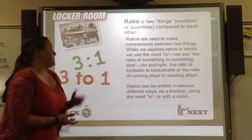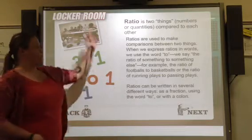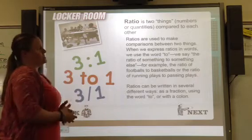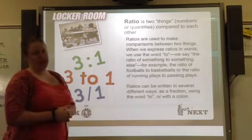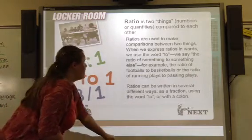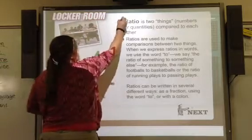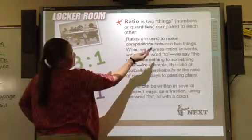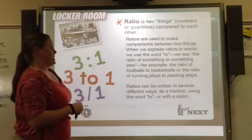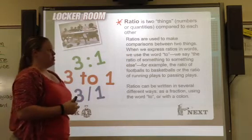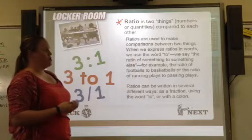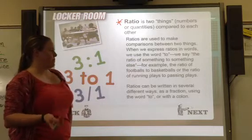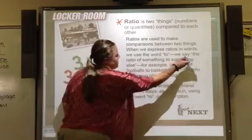Our first thing to take into account is ratios. A ratio is two things — numbers or quantities — compared to each other. Record this definition. Ratios are used to make comparisons between two things. When we express ratios in words, we use the word 'to.' We say the ratio of something to something else. Record that as well.